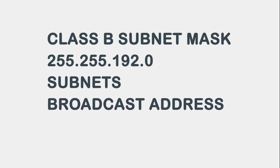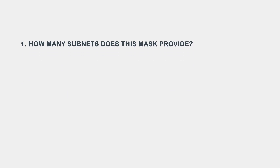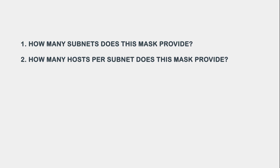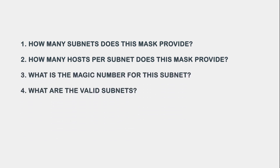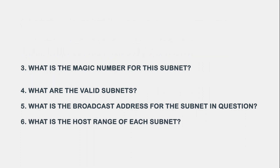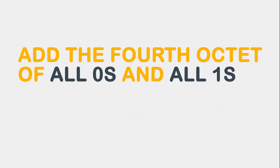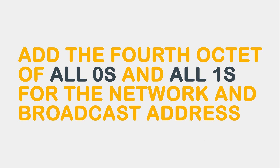We will start with the Class B subnet mask of 255.255.192.0 and figure out the subnet's broadcast address and valid host range. We will answer six questions: How many subnets does this mask provide? How many hosts per subnet does this mask provide? What is the magic number for this subnet? What are the valid subnets? What is the broadcast address for the subnet in question? What is the host range for each subnet? Remember, when subnetting in the third octet, you need to include the fourth octet in your calculations. On the 255.255.192.0 mask, the subnetting will be done in the third octet. To create a valid subnet, you must add the fourth octet of all zeros and all ones for the network and broadcast address.